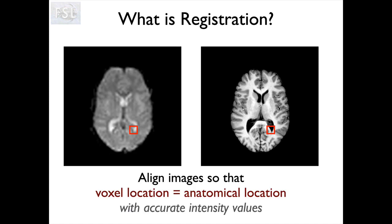If we actually align these images, or register them — those two things mean pretty much the same thing — registration is the process whereby we align the images. After registration they're well aligned, and you can see that now that location represents the same anatomy in both images. We're after a process whereby through registration we end up with images where, if we pick the same location within the image specifying the coordinates, we will end up with the same bit of anatomy within those different images.